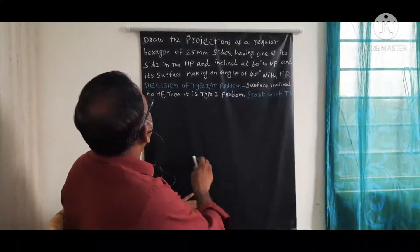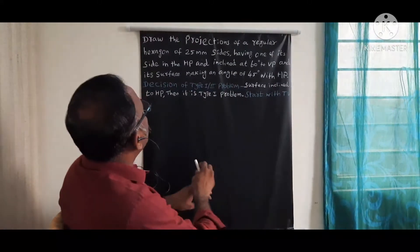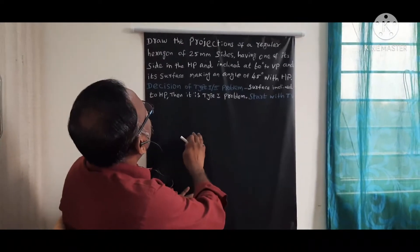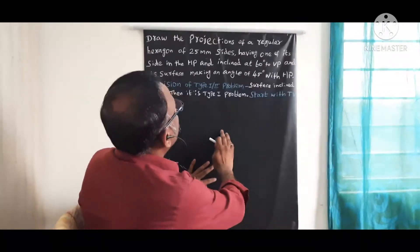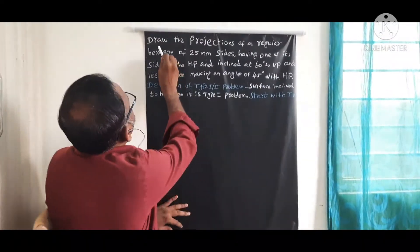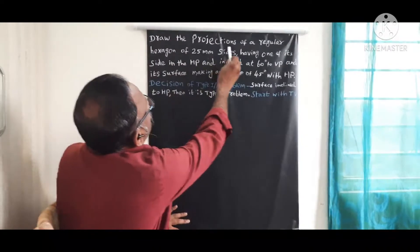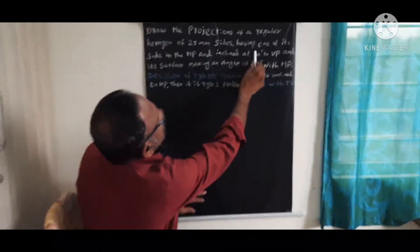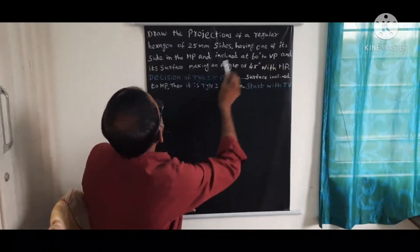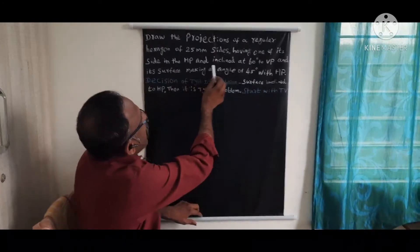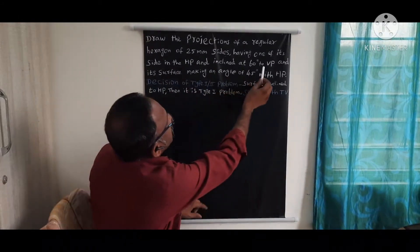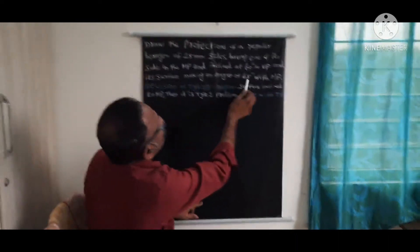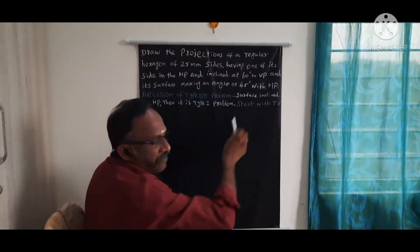Welcome to today's class. I am going to explain how we are going to solve one hexagonal type problem. Draw the projection of a regular hexagon of 25 mm sides having one of its side in the HP and inclined at 60 degrees to VP, and its surface making an angle of 45 degrees with HP.